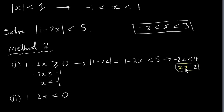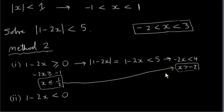This solution is subject to the constraint that one minus two x was greater than or equal to zero in the first place. If one minus two x is greater than or equal to zero, it means that minus two x is greater than or equal to minus one, so dividing across by minus two gives x less than or equal to a half. Combining with x greater than minus two, we can write this as minus two less than x less than or equal to a half.